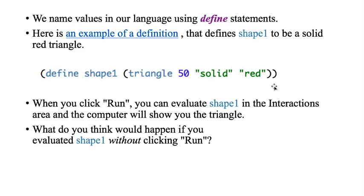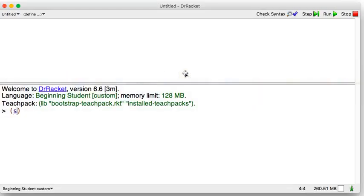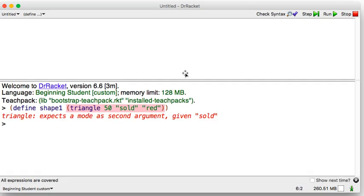So I'm going to run that. It's a solid red triangle. Define shape1, and it was a triangle 50 solid red. Now that didn't make a triangle, right? It defined this shape1 to be this expression. When I hit Enter, all it did was make that definition.